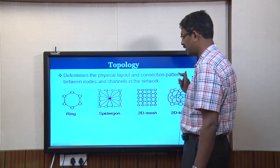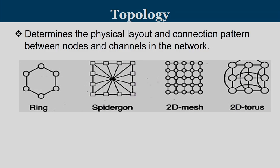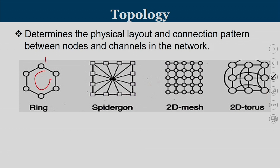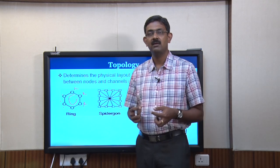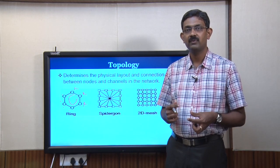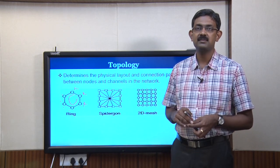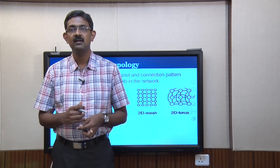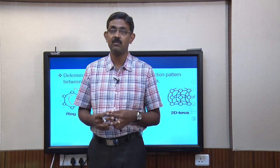In ring topology, all routers are connected in a ring — each router has exactly two neighbors. Data flows from one router to the next, forwarded along the ring. The ring network has low cost since fewer channels connect a set of routers, but data can take a long time to reach the opposite end if there are many routers.